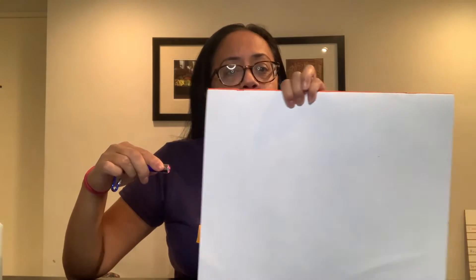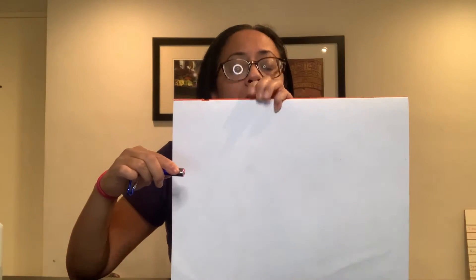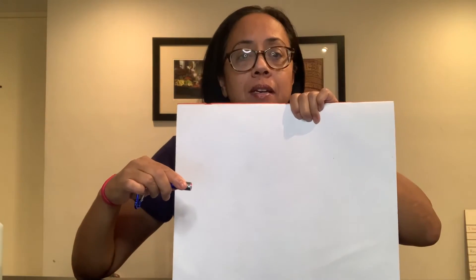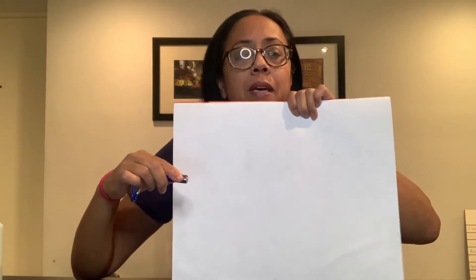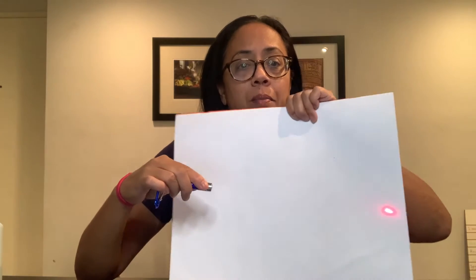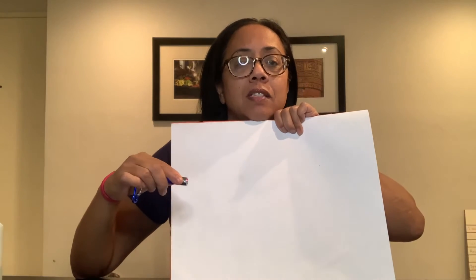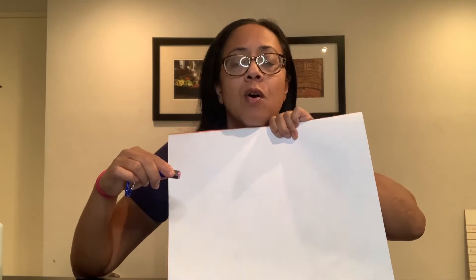Watch this. I've got a dot, but if I try to actually see the beam of light, it doesn't appear. There's the dot but the beam is invisible. Why do you think that is?